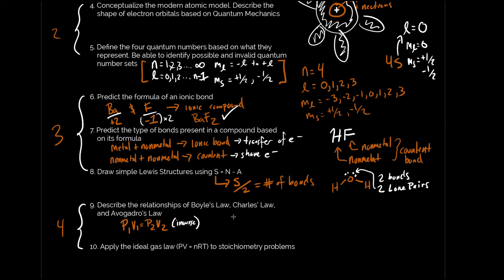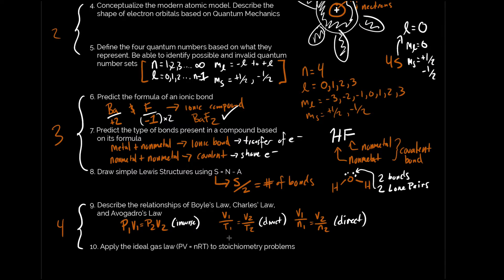Then you have Charles's law: V₁/T₁ = V₂/T₂ — this is a direct relationship, meaning as temperature goes up, volume goes up. And Avogadro's law: V₁/n₁ = V₂/n₂ — also direct, stating that as number of moles goes up, volume goes up. I want you to understand these simple relationships both in words and with calculations.